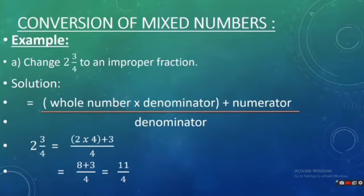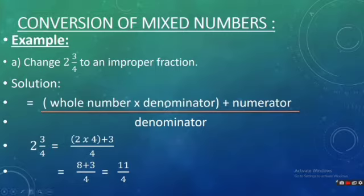Now look at the example over here. The example is: change 2 whole 3 by 4 to an improper fraction. While converting mixed numbers into improper fractions, keep this rule in your mind: whole number multiplied by denominator, then bracket plus numerator, then the whole divided by denominator.